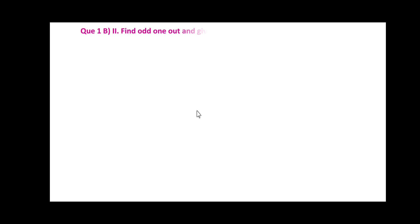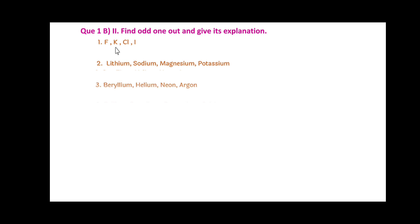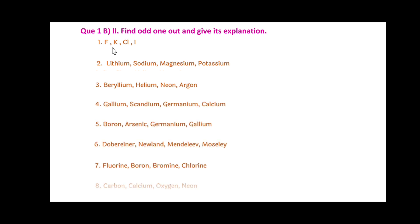The question will be like this: Question number 1b, second part — second variety of questions we are going to consider. Find the odd one out and give its explanation. Explanation is important. Number 1: they have given the sub-question — find the odd one out with reason, with explanation.